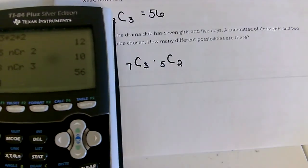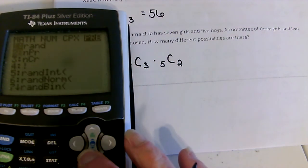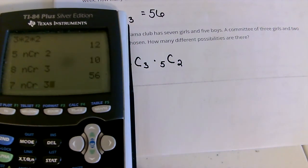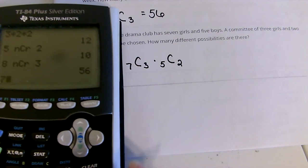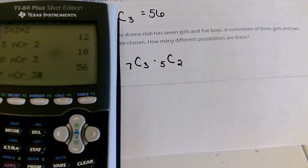So we've got 7 girls and we need to choose 3 times 5 boys choose 2. I would definitely use the calculator for this one because that would get hairy. So, 7 choose 3 times, I probably need to do these separate. So, 7 choose 3.